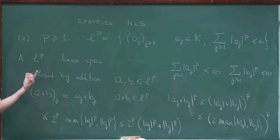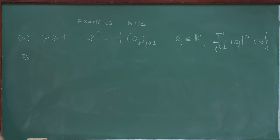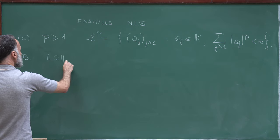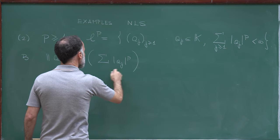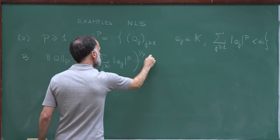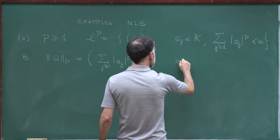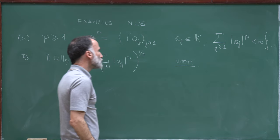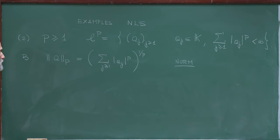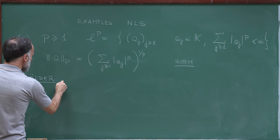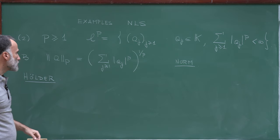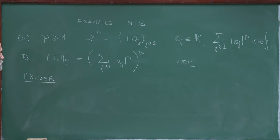My second claim is that we introduce a norm. For a sequence A, I define the p-norm of A as the sum of |aⱼ|^p for j ≥ 1, raised to the power 1/p. I claim this is a norm. I leave to you to prove this as an exercise, but you will need what is called the Hölder inequality to prove the triangle inequality.